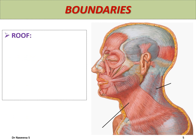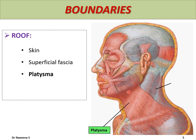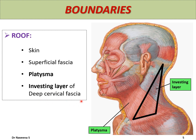The roof of the posterior triangle is formed by the following structures from outside to inside: skin, superficial fascia containing loose connective tissue, a thin layer of fat, and a subcutaneous muscle known as platysma. The fibers of platysma are oriented obliquely and cover only the lower and anterior part of the roof of the posterior triangle, whereas the rest of the muscle forms the roof of the anterior triangle. Deep to the platysma lies the investing layer of deep cervical fascia — the outermost layer of deep fascia of the neck. It splits and encloses the sternocleidomastoid in front and trapezius muscle behind, forming the roof of the posterior triangle.